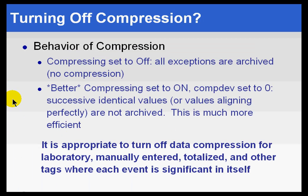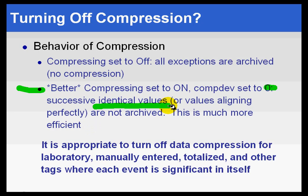What's better than turning it off entirely is to set compressing to on, but set the compression deviation to zero. The reason we recommend that is because it will at least remove identical values that are succeeding each other. It will remove those identical values, but it will still bring in data that changes even if it's very, very small amounts. So almost nobody would want to see the same value over and over again if it represents really no change at all. This is a lot more efficient, and we do recommend that over turning compressing off entirely.